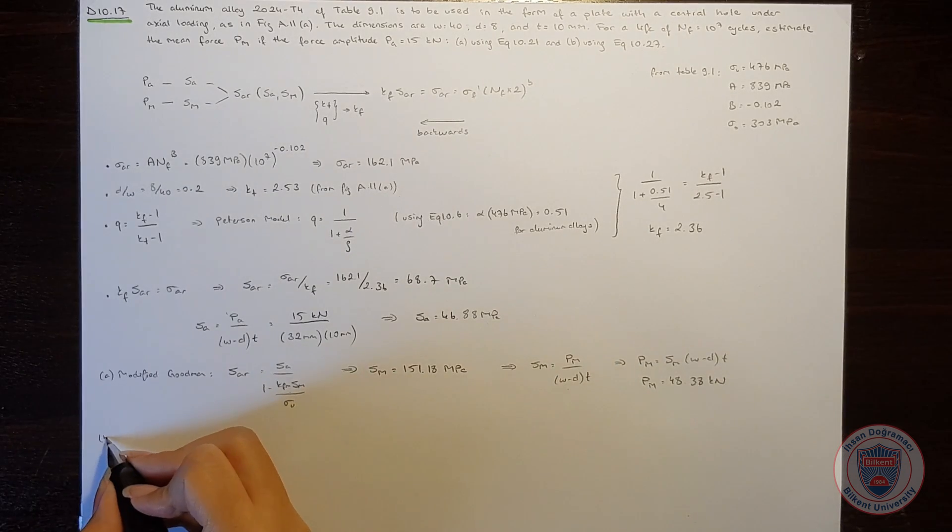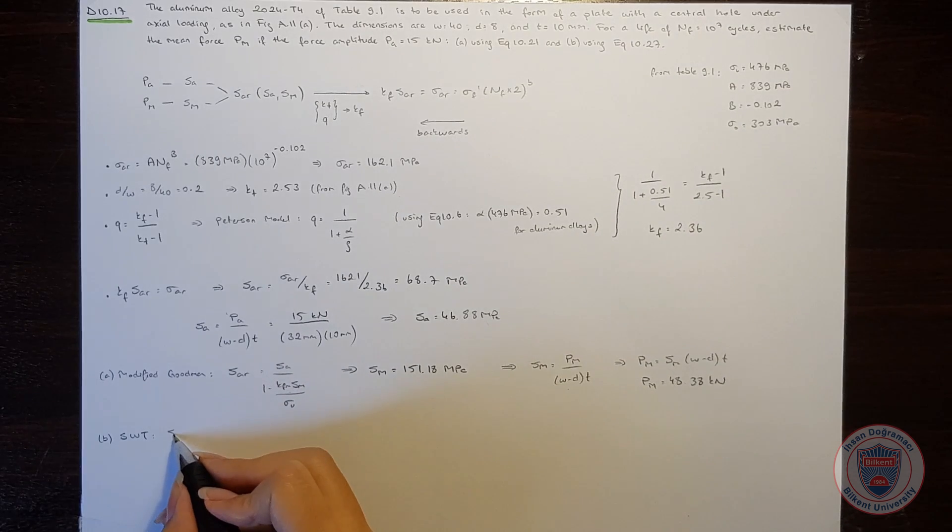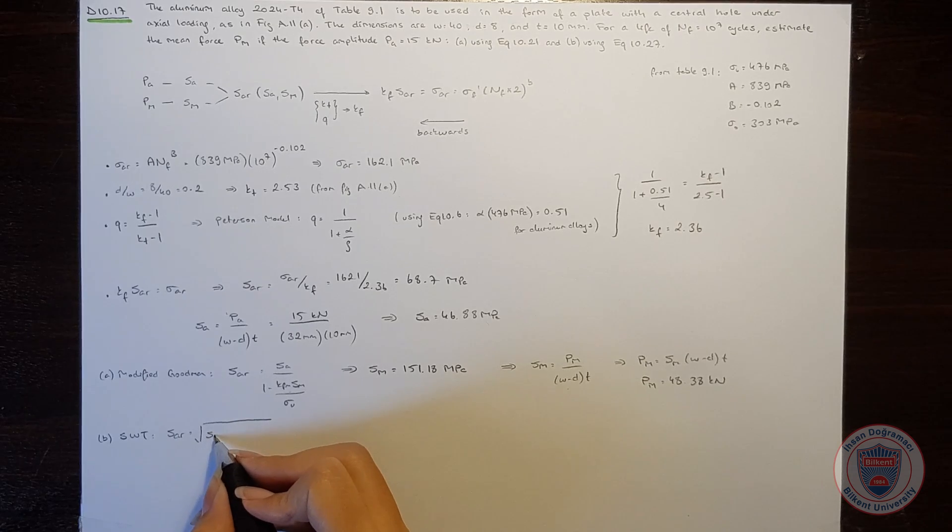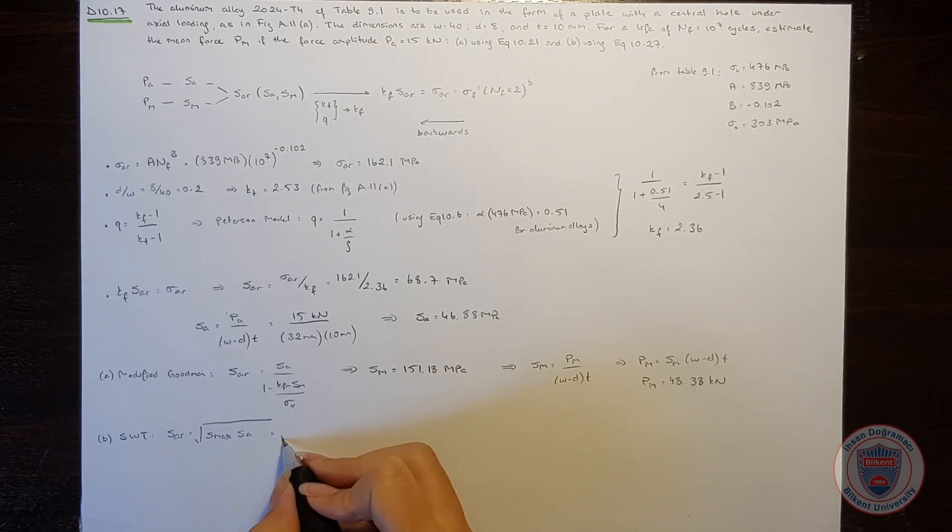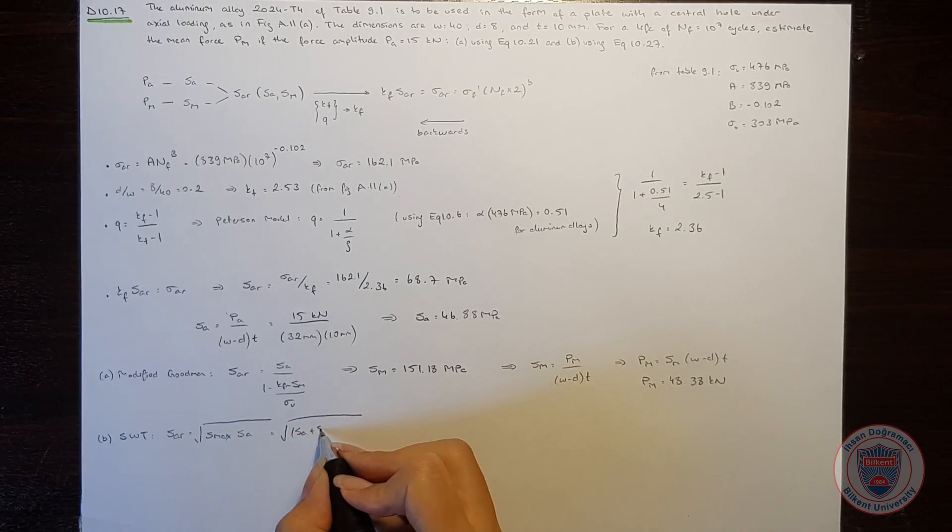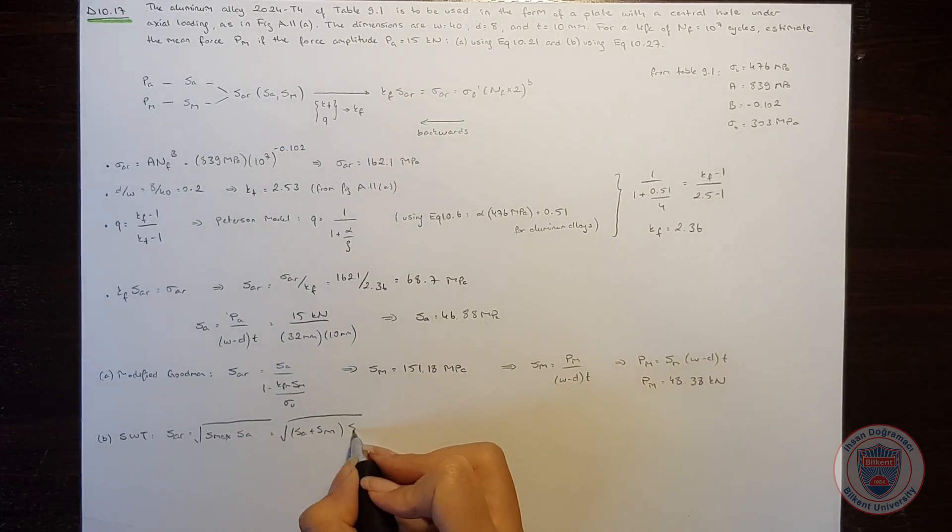And when we use SWT, we will consider SAR as the square root of Smax times SA, which is equal to the square root of SA plus SM times SA.